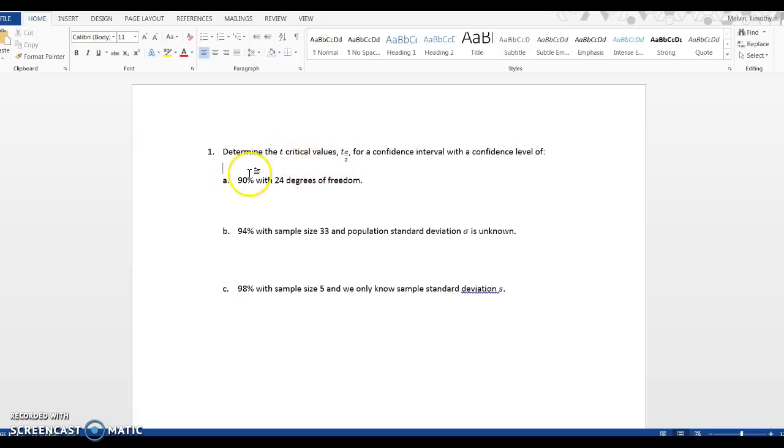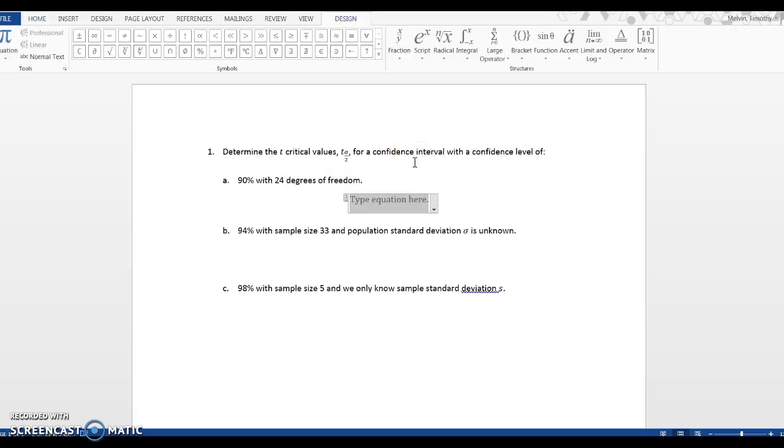For the first part I want to compute a 90% confidence interval where we have 24 degrees of freedom. I want to look at what is alpha. Just like before, this is 1 minus 0.90 which is 0.10.